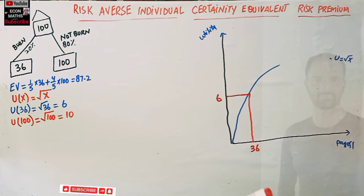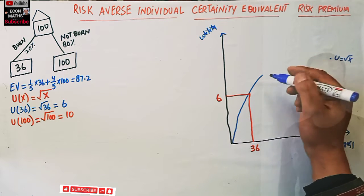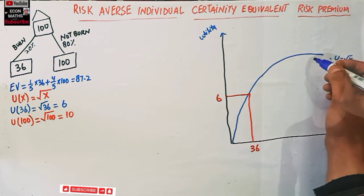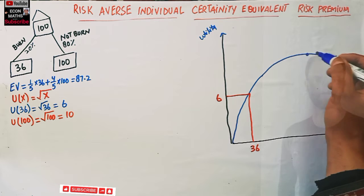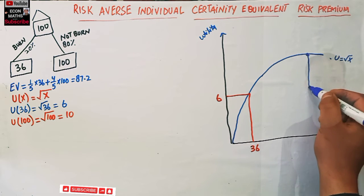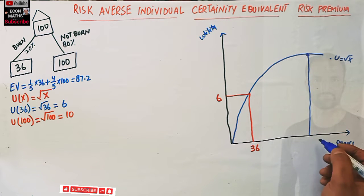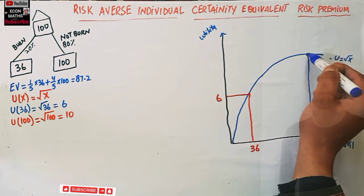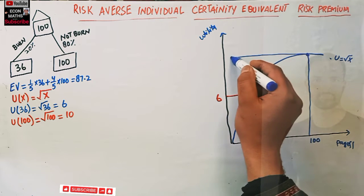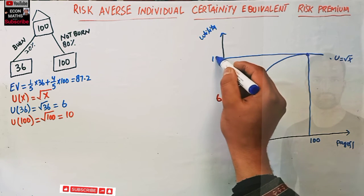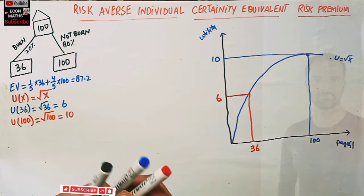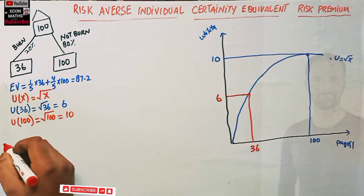And what is the utility of 100 dollars? U(100) = √100 = 10. So at x = 100, utility is 10. Now what is the expected utility of this gamble?